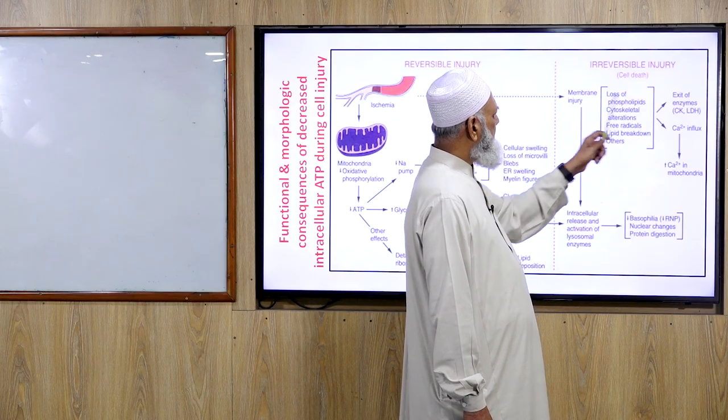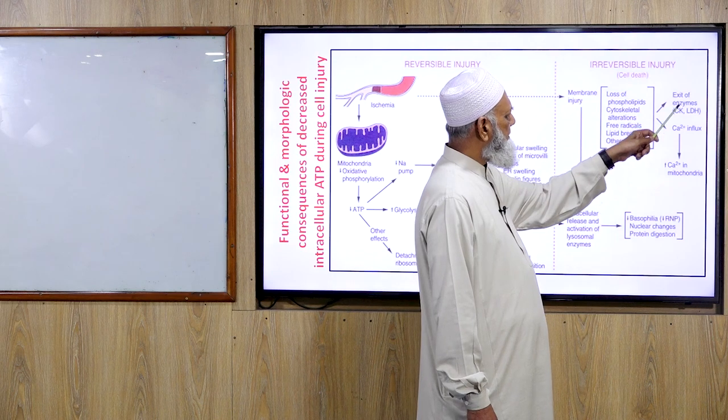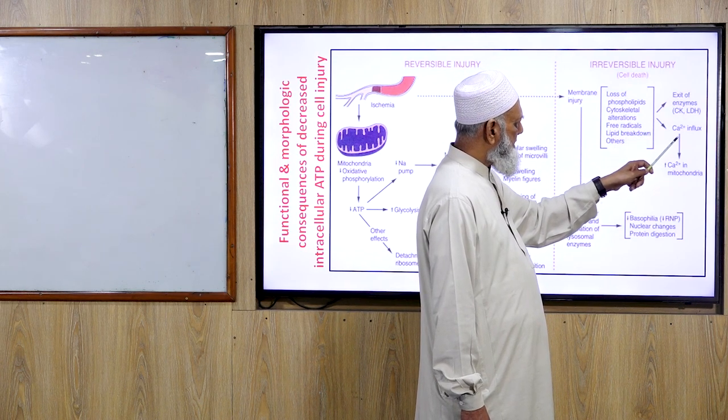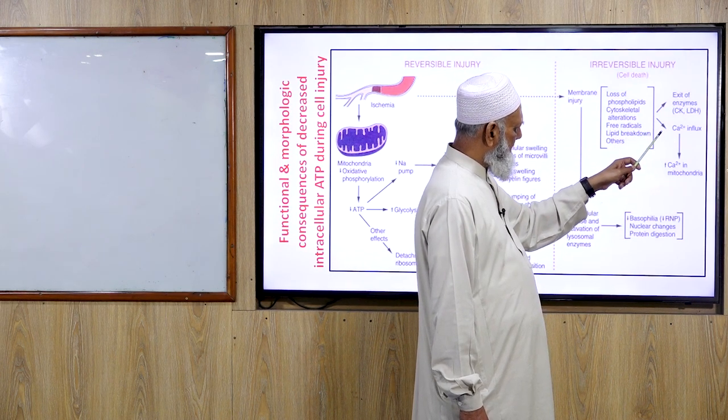Membrane damage causes exit of enzymes and calcium influx into the mitochondria.